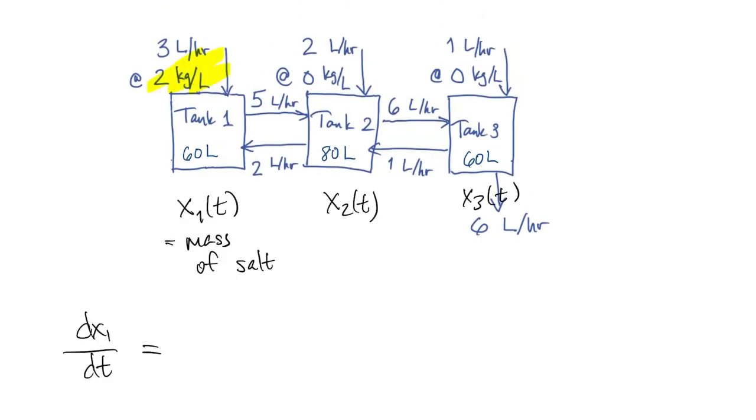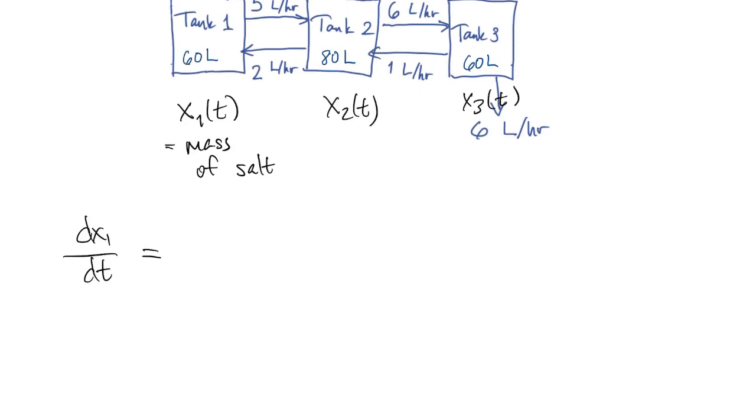First of all, there's a contribution from the external flow into the tank. So dimensional analysis will make sure that we get this right. So that gives us kilograms per hour. And then we have what's coming out of tank one. So that's at a rate of five liters per hour times the concentration in tank one.